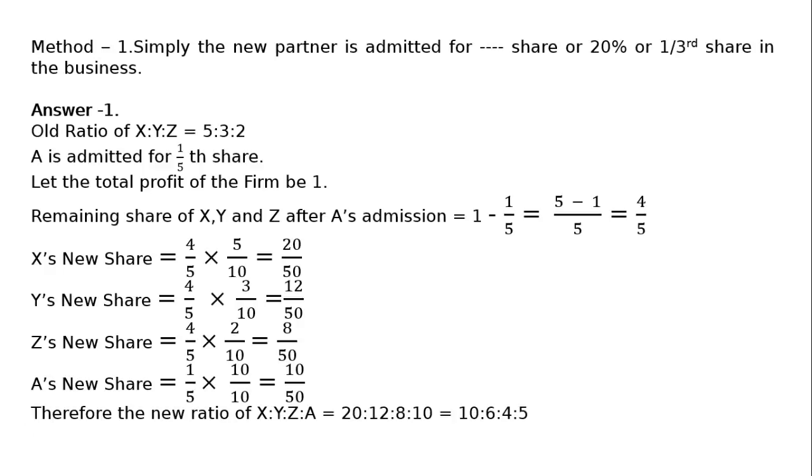Therefore, the new ratio of X:Y:Z:A = 20:12:8:10 = 10:6:4:5.